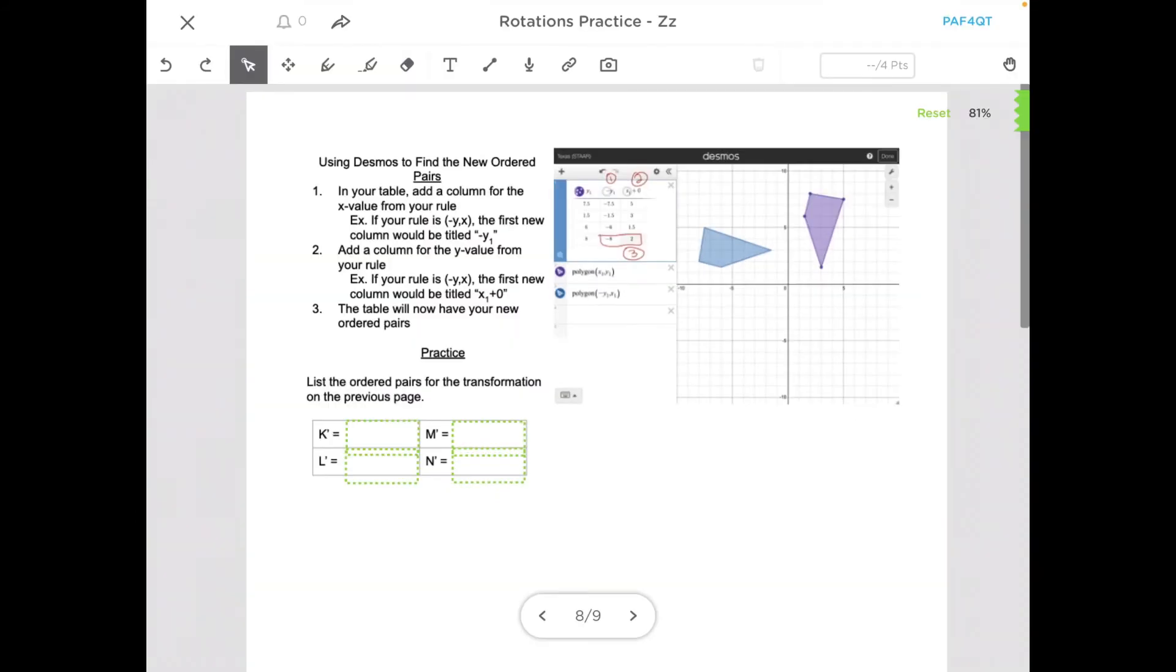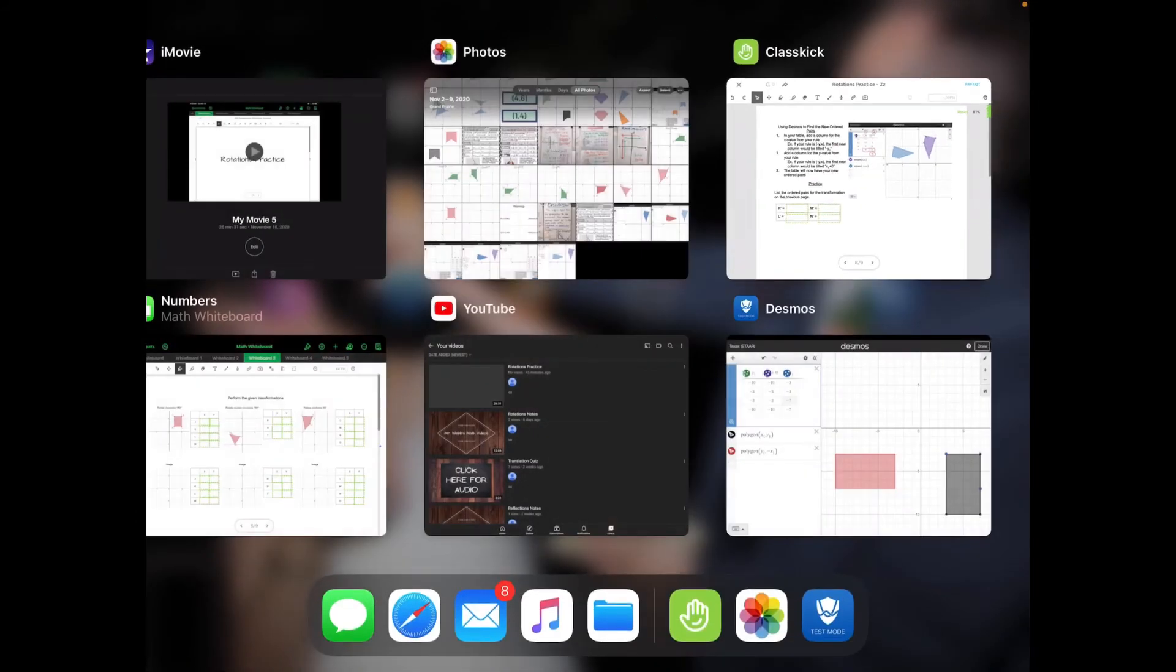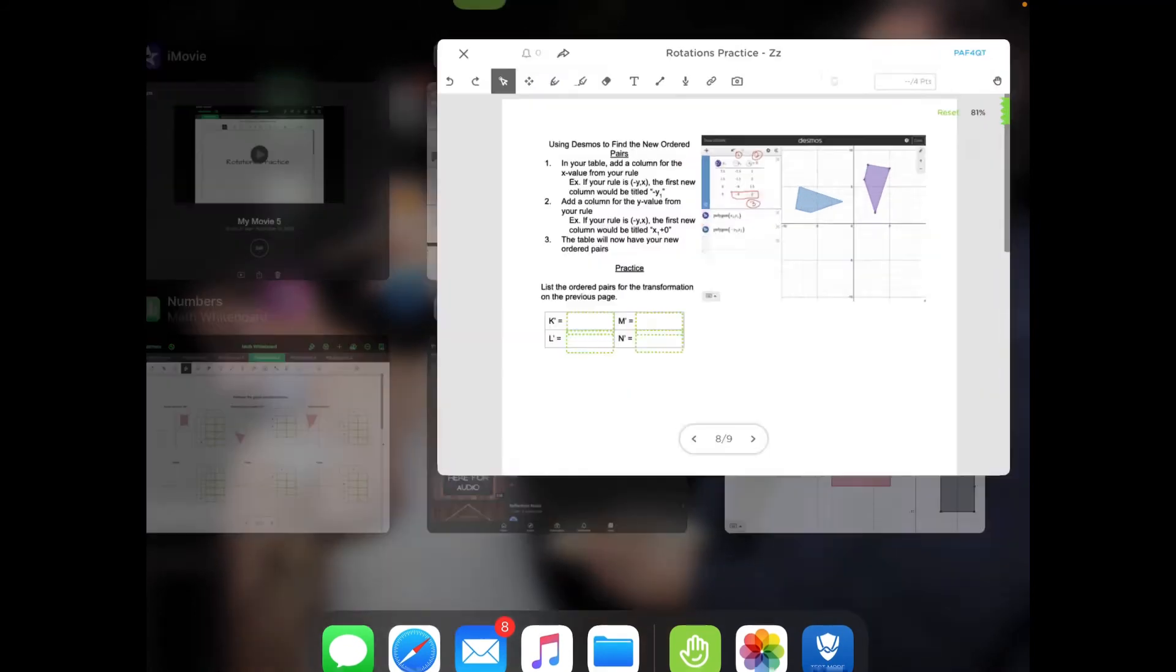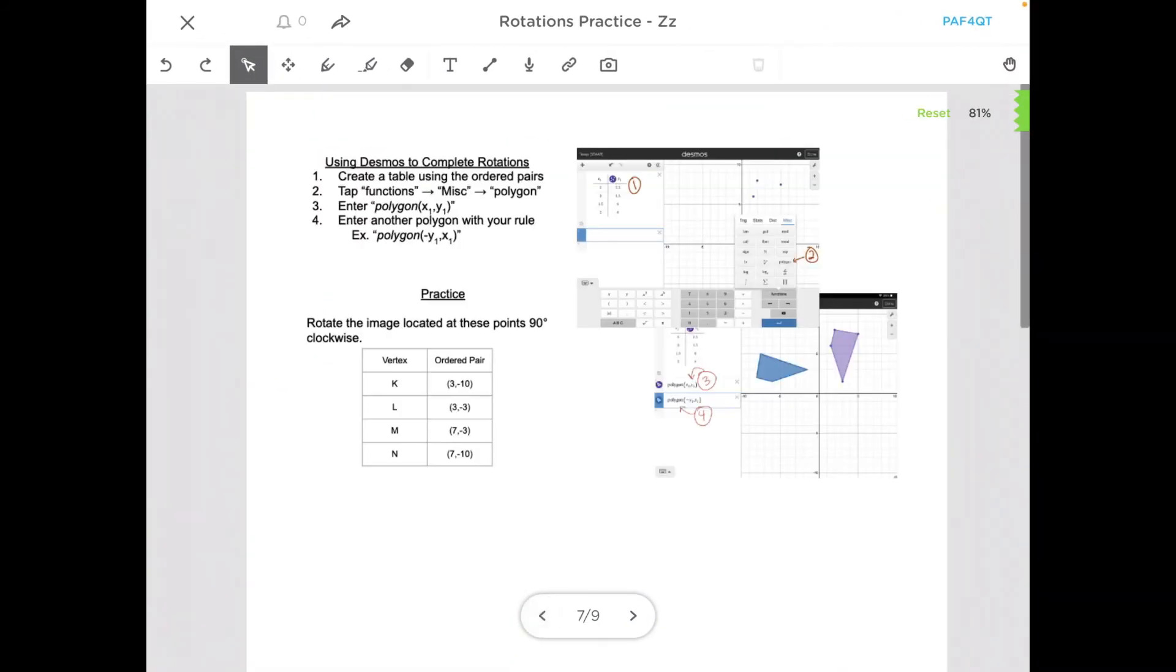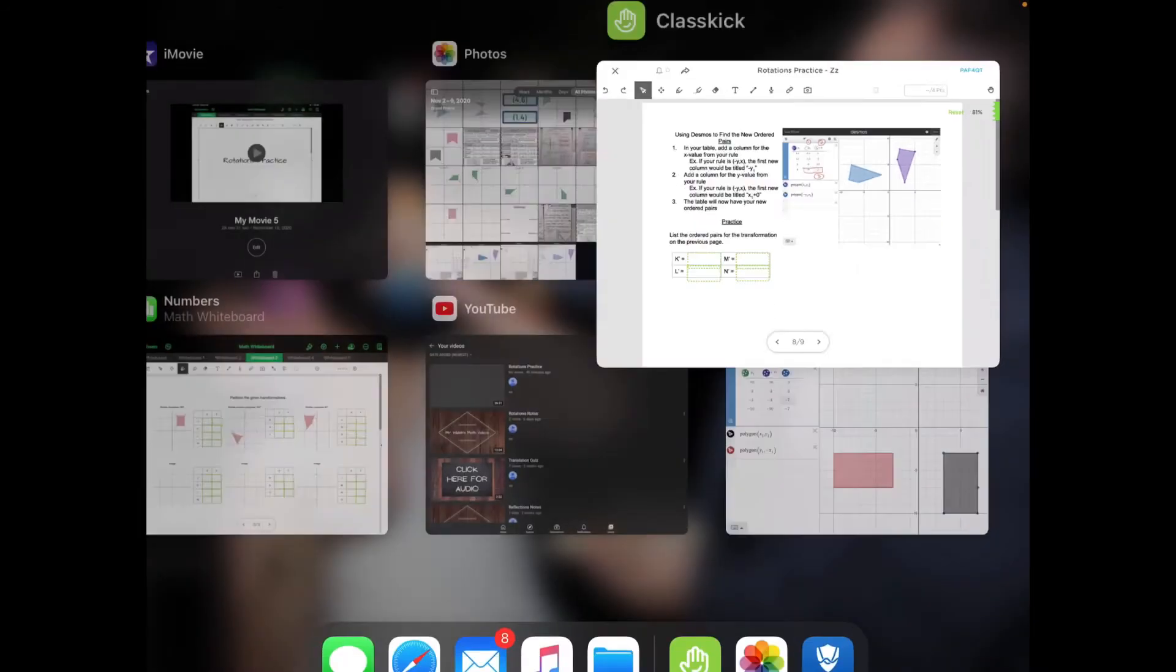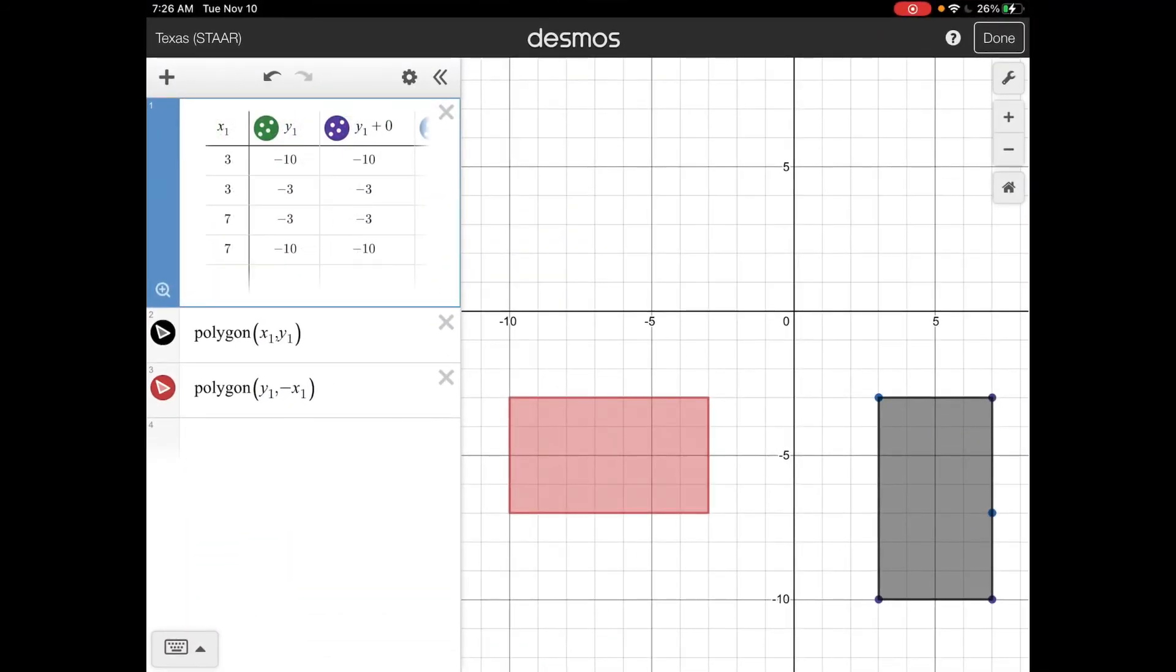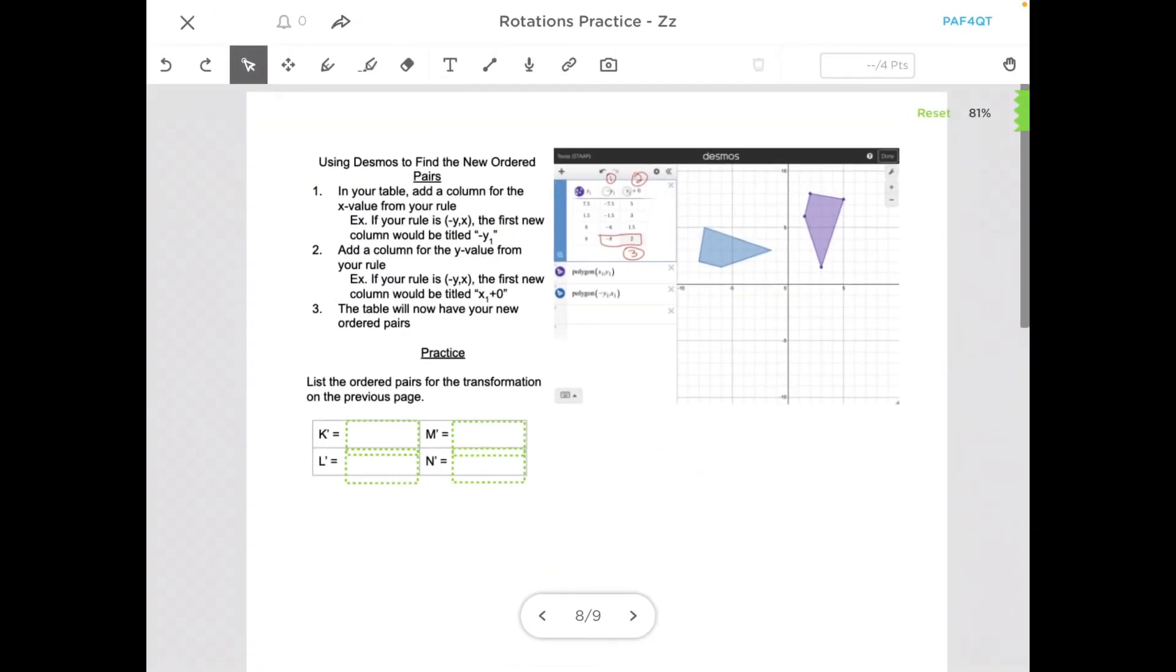So those are what we're going to put into these green dotted boxes. So K prime, it goes down in order, so K prime was (-10, -3).